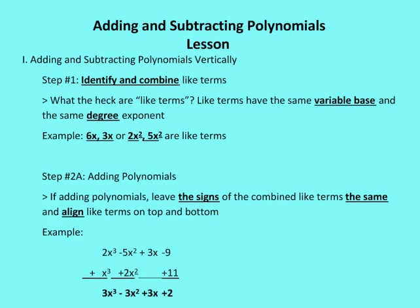Like terms have the same variable base and the same degree exponent. For example, 6x and 3x have the same variable base, x, and the same degree exponent, which is 1. Or 2x squared and 5x squared have the same variable base, x, and the same degree exponent. So we want to identify and combine like terms.